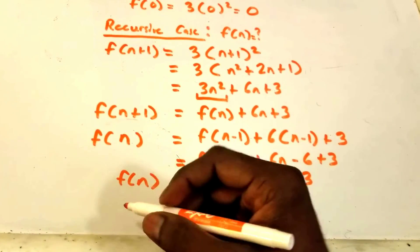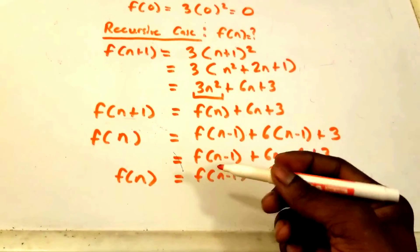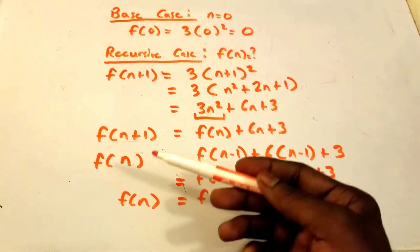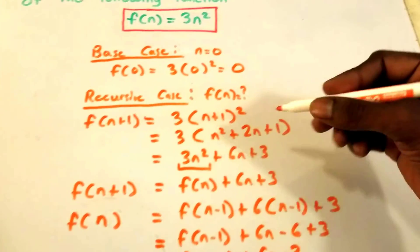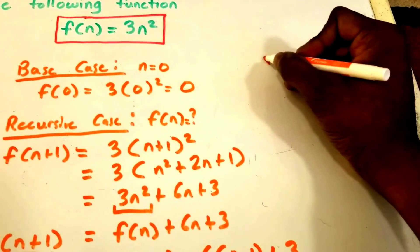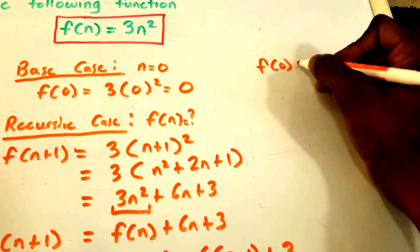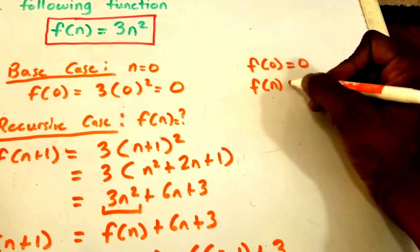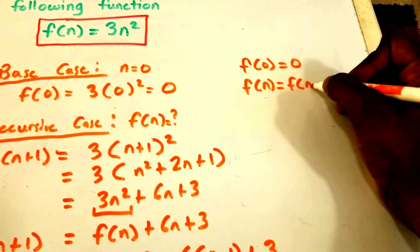So now we found our recursive case f(n) and we found our base case. So our recursive definition would be f(0) = 0 and f(n) is equal to f(n-1) + 6n - 3.